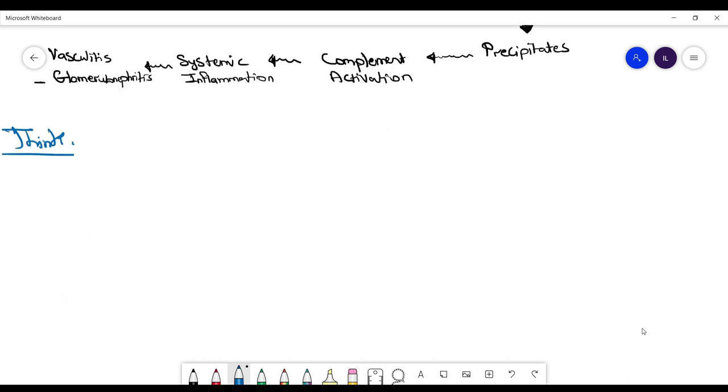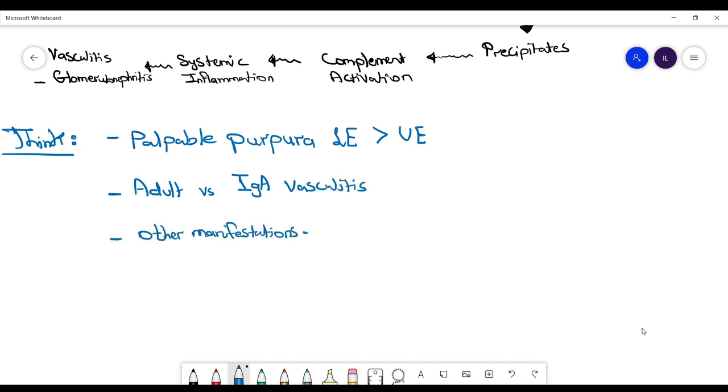Clinically, think about cryoglobulinemia vasculitis if the patient presents with palpable purpura, a sign of vasculitis, mainly in the lower extremities. It occurs more in adults compared to IgA vasculitis, and you need to look for other manifestations.